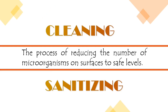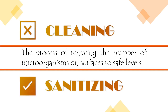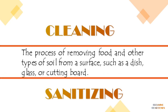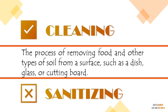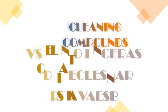Before I end this lesson, let me first check if you learned something. Between cleaning and sanitizing, what is the process of reducing the number of microorganisms on surfaces to safe levels, or using heat, radiation, or chemicals to kill microorganisms? The answer is sanitizing. How about the process of removing food and other types of soil from a surface such as a dish, a glass, or a cutting board? Remember the word remove — the answer is cleaning. Now, what are the three types of detergents primarily used as cleaning compounds?